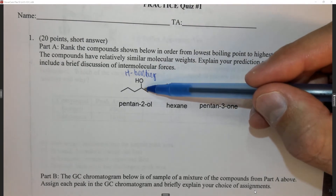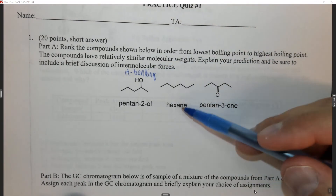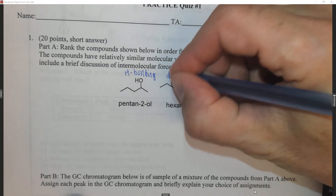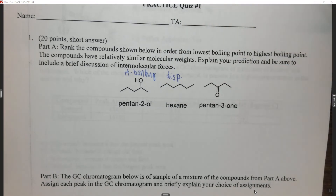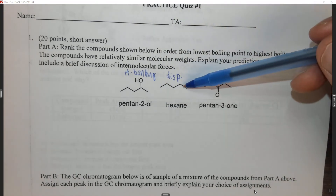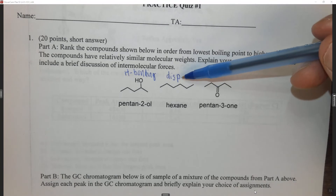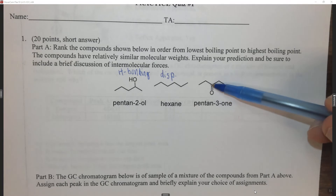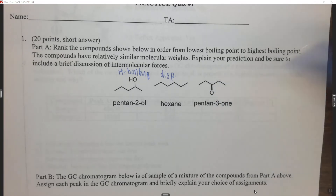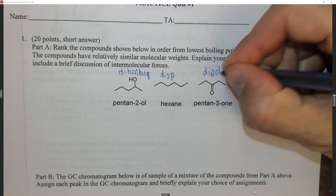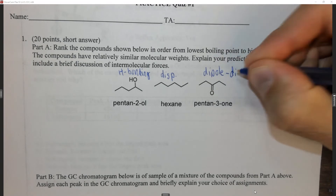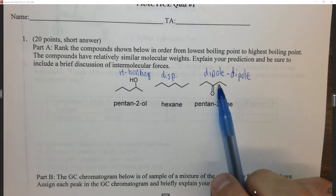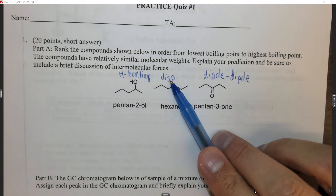This molecule is going to have hydrogen bonding, which is present when you have an OH or NH, and the strongest intermolecular force here is hydrogen bonding. So this has very strong intermolecular forces and a relatively high boiling point. If we look at hexane we only have carbons and hydrogens — the strongest intermolecular force is dispersion forces, which are relatively weak, giving it a low boiling point. This third molecule has a C=O double bond, which is polar because oxygen is more electronegative than carbon, so it has dipole-dipole intermolecular forces.